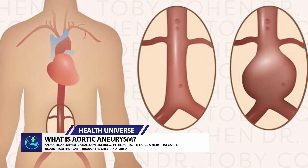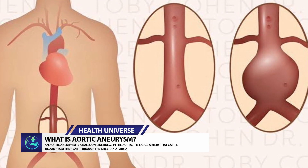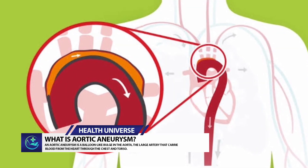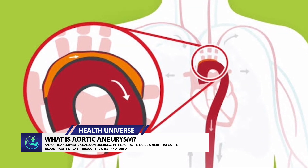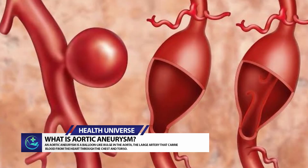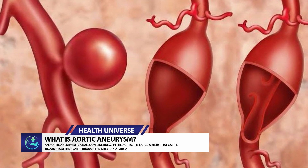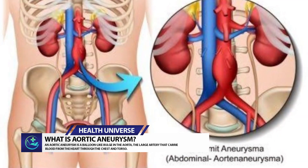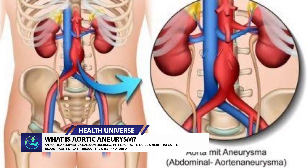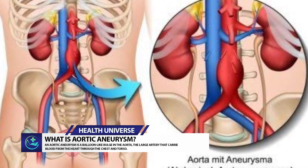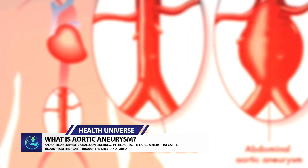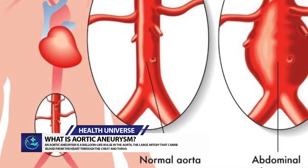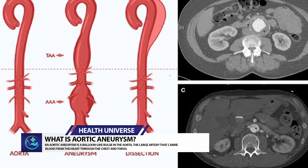What is aortic aneurysm? An aortic aneurysm is a balloon-like bulge in the aorta, the large artery that carries blood from the heart through the chest and torso. Aortic aneurysms can dissect or rupture. The force of blood pumping can split the layers of the artery wall, allowing blood to leak in between them. This process is called a dissection.